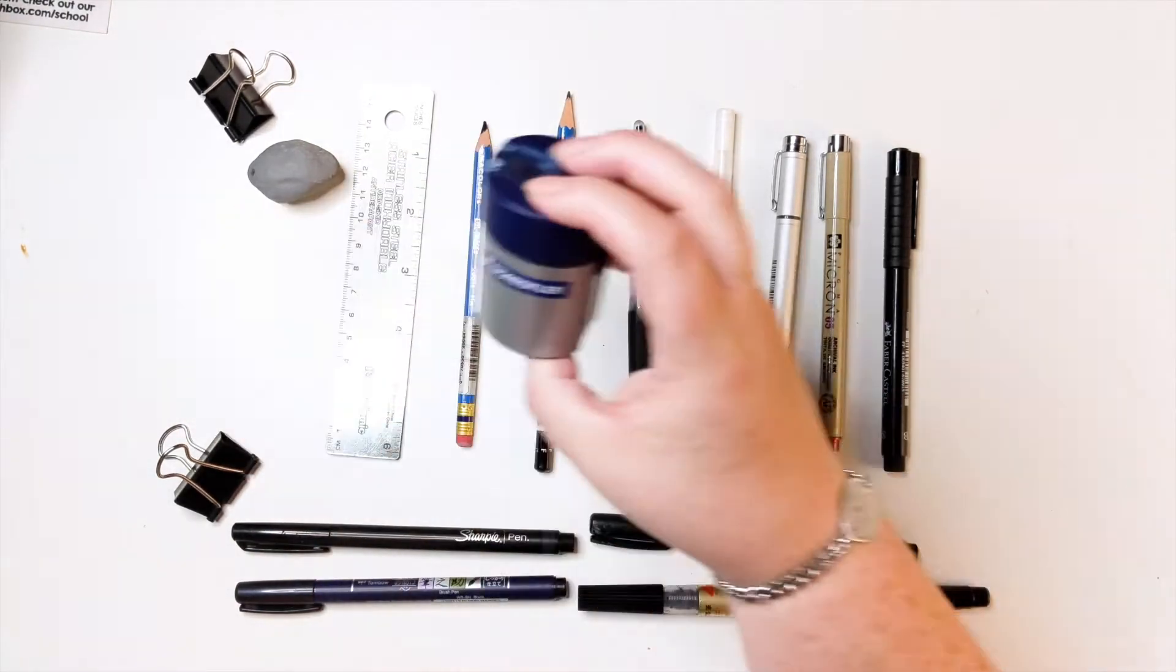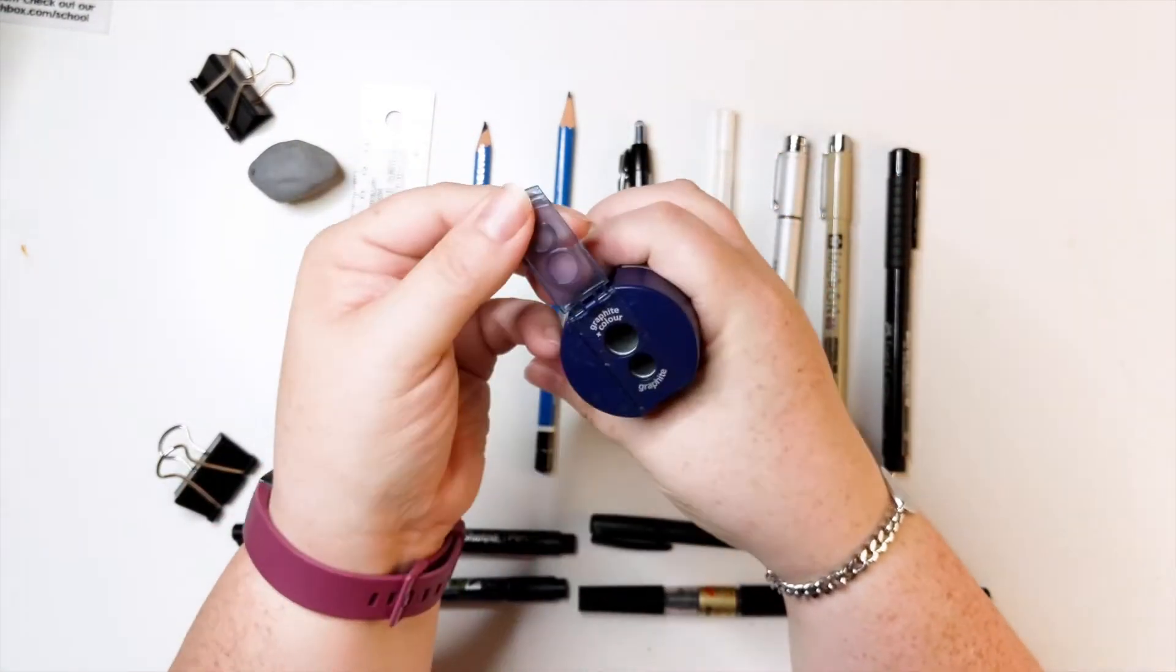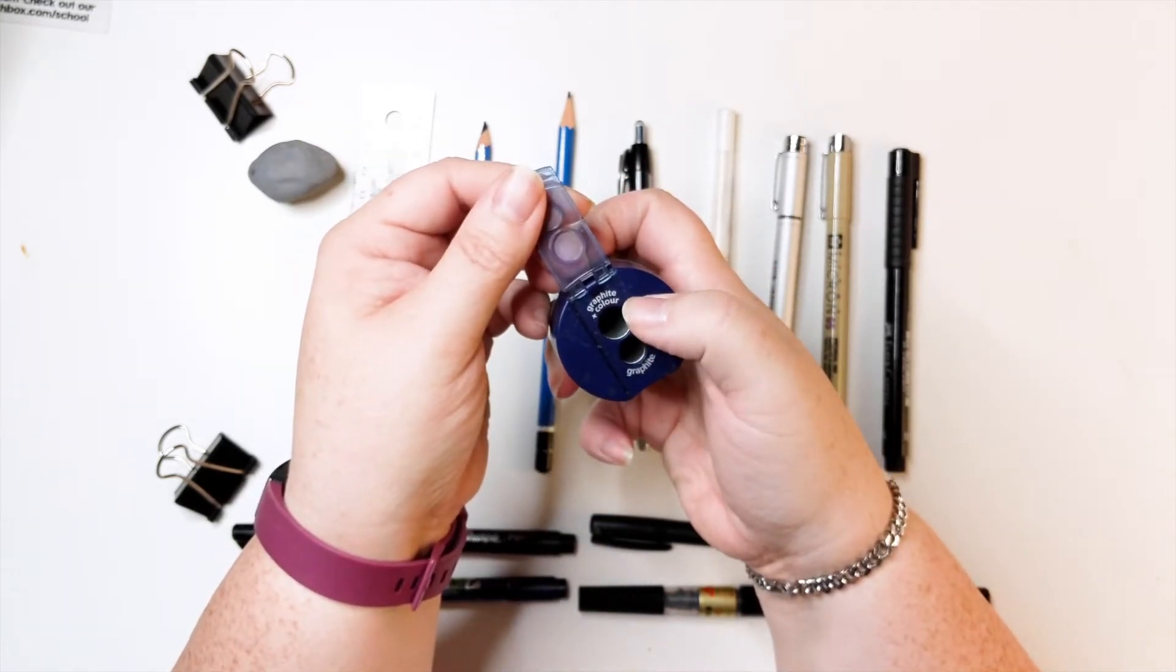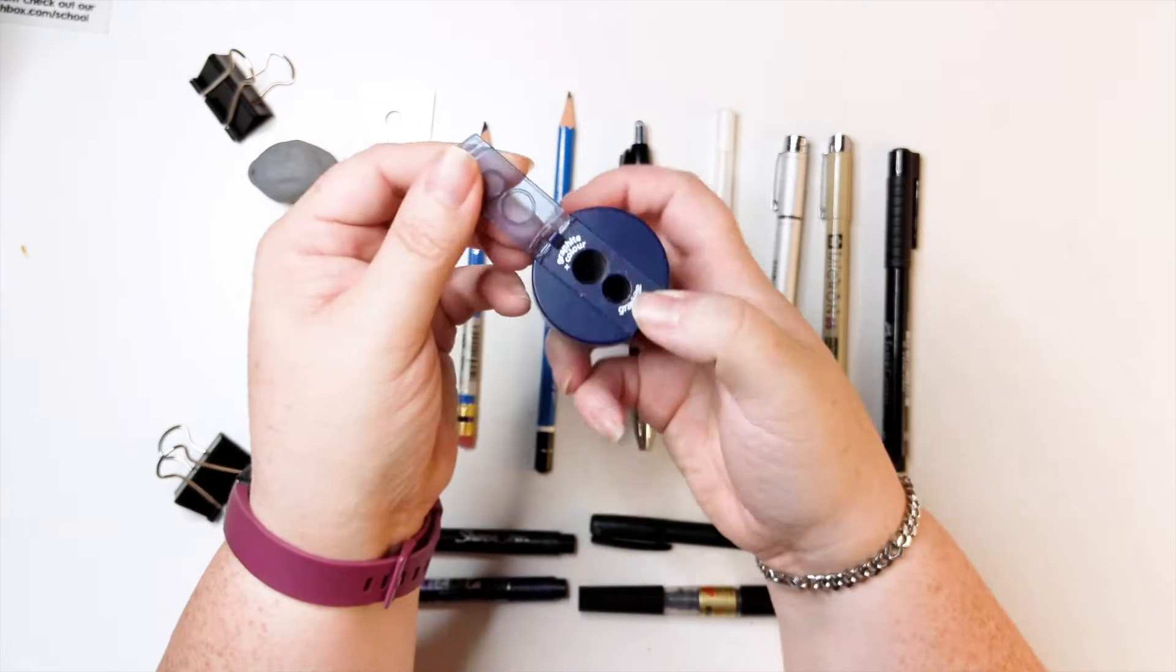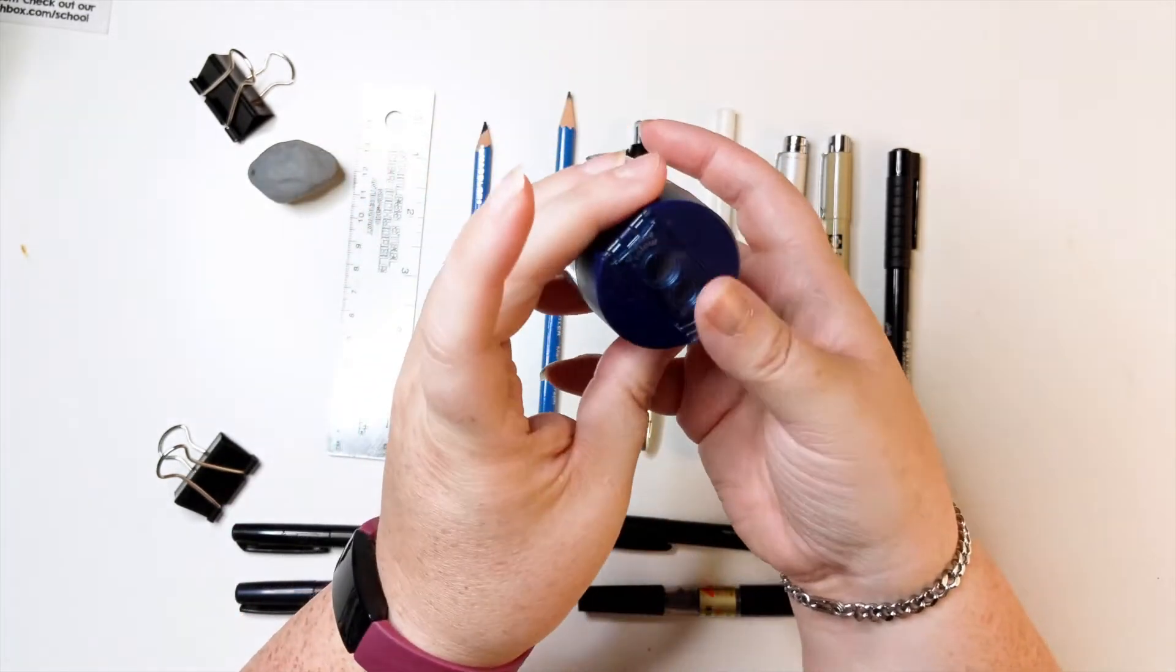So first things first, I have a Staedtler pencil sharpener. It has a separate place for graphite and color, and then graphite. I'm assuming so that the color doesn't get on your normal graphite pencils.